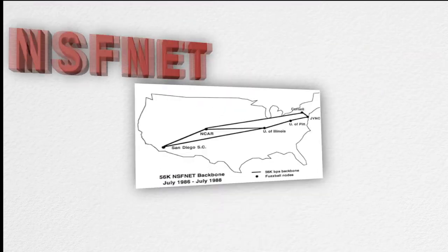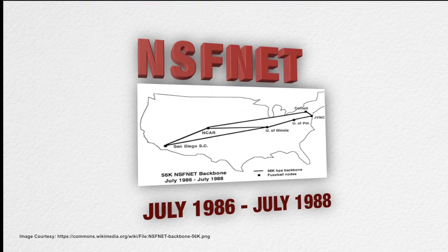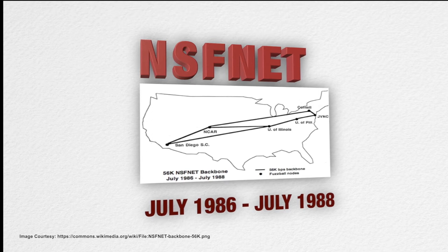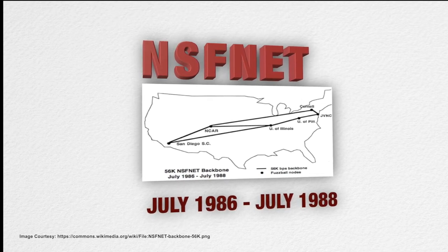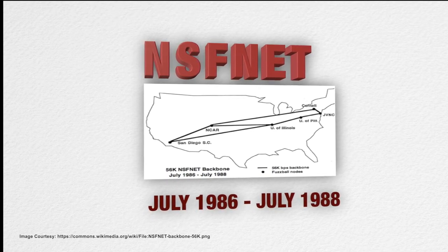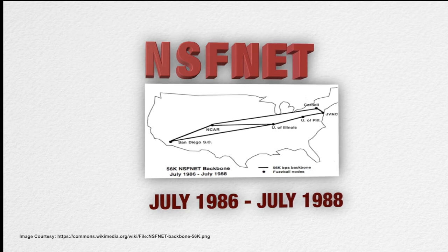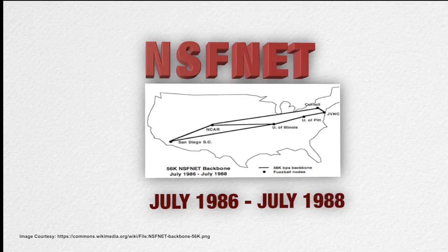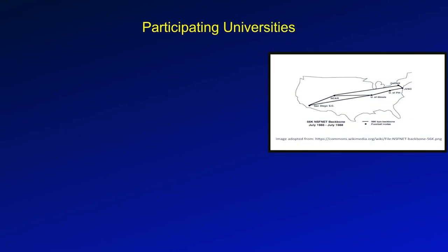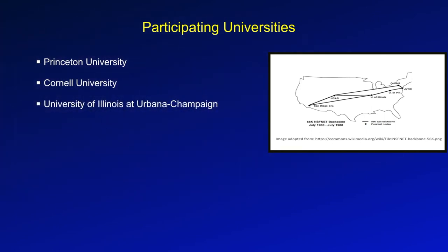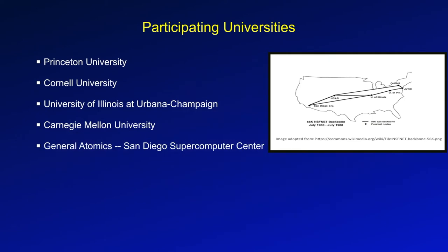Soon after, in 1986, NSF or National Science Foundation backbone was created and five US university computing centers were connected to form NSFnet. The participating universities were Princeton University, Cornell University, University of Illinois, Carnegie Mellon University, and General Atomics San Diego Supercomputer Center.